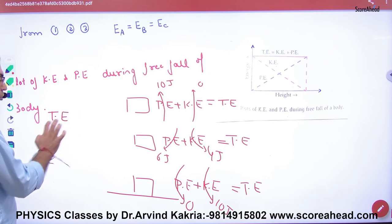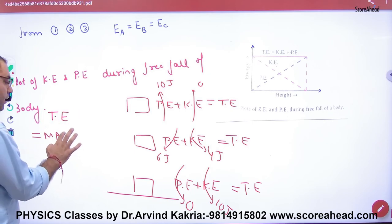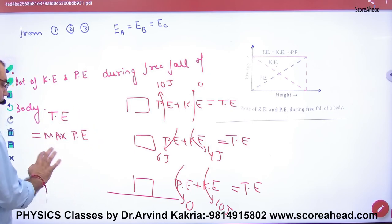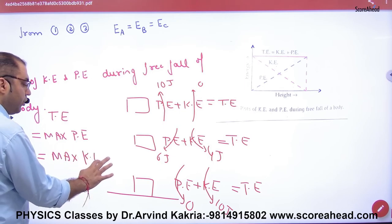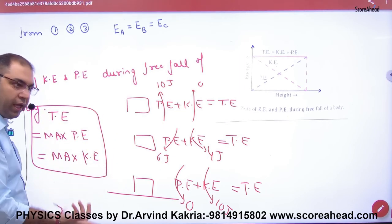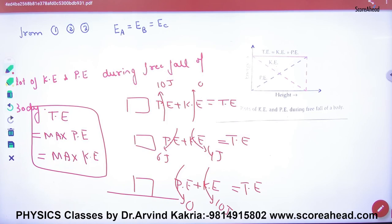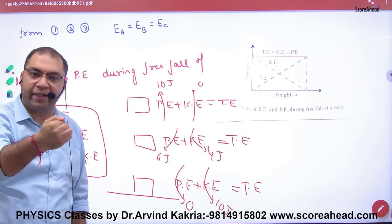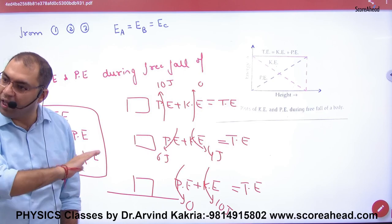So sometimes total energy will be used as total energy in numerical problems, sometimes maximum potential energy is used, sometimes maximum kinetic energy is used. Because if potential energy is maximum, then kinetic is zero. So you should know this rule.